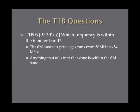Which frequency is within the 6-meter band? The 6-meter band privileges for amateur radio operators falls between 50 MHz and 54 MHz. So anything in that range is within the 6-meter amateur privileges. There's only one answer on the exam that's in the 50s — just remember 6 meter and 50.